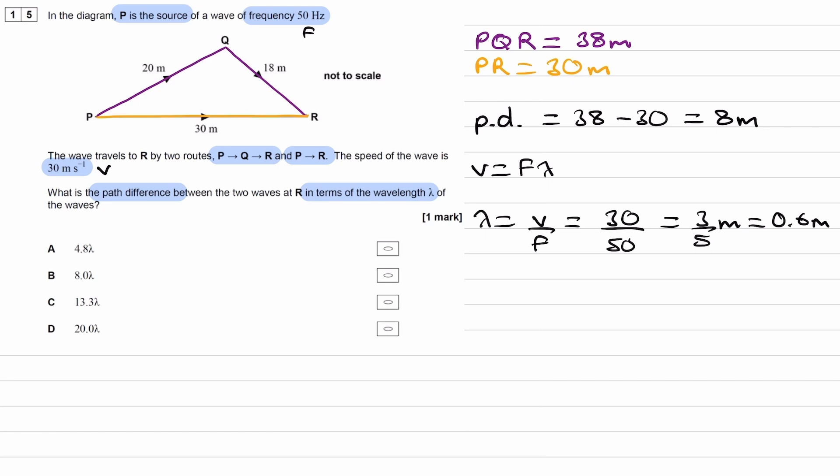If we divide those two things, we do the total path difference divided by what one single wavelength is, 0.6. We end up with the number of wavelengths in that path difference. This will be 13.3 recurring. That's the number of wavelengths in the path difference of 8 meters. So that is the path difference in terms of wavelength. So our answer would be C.